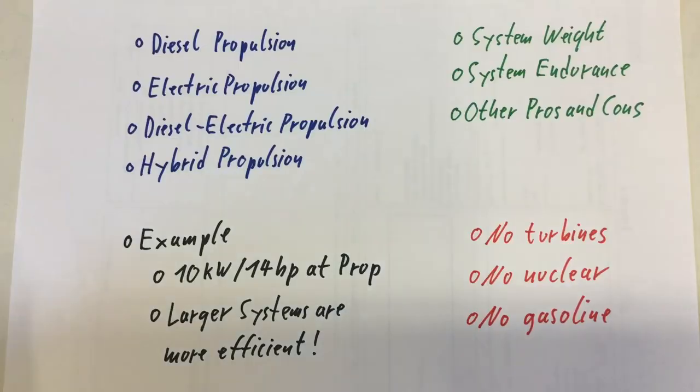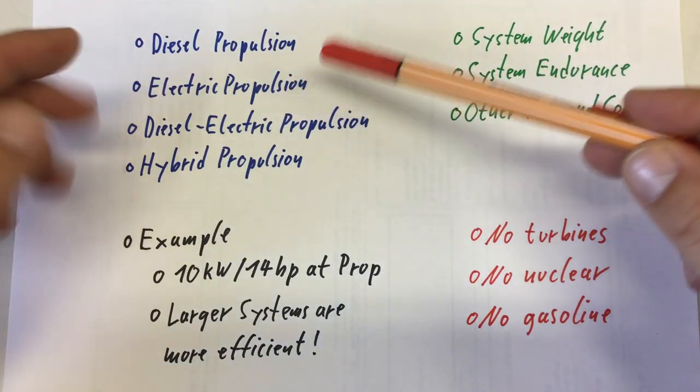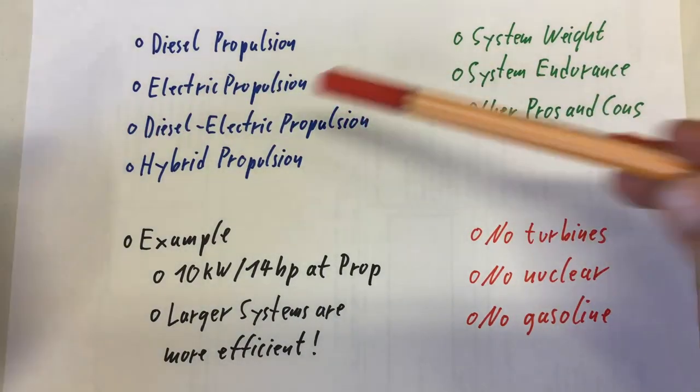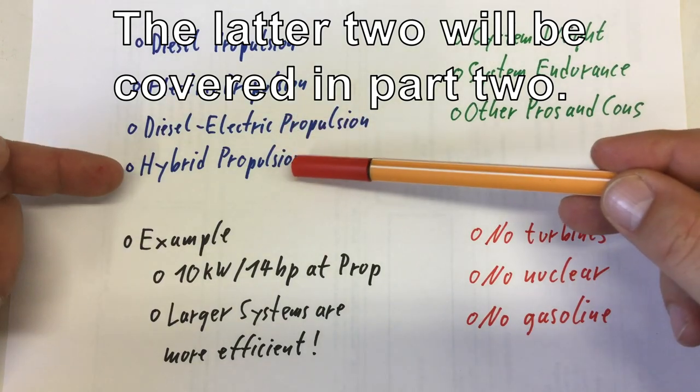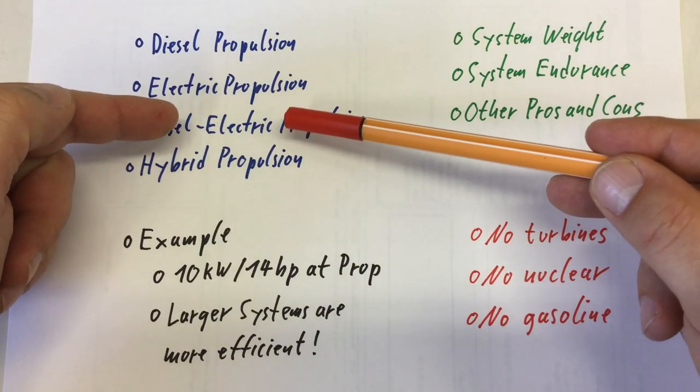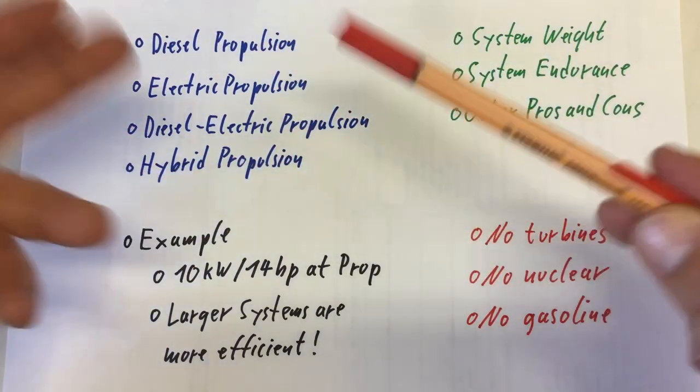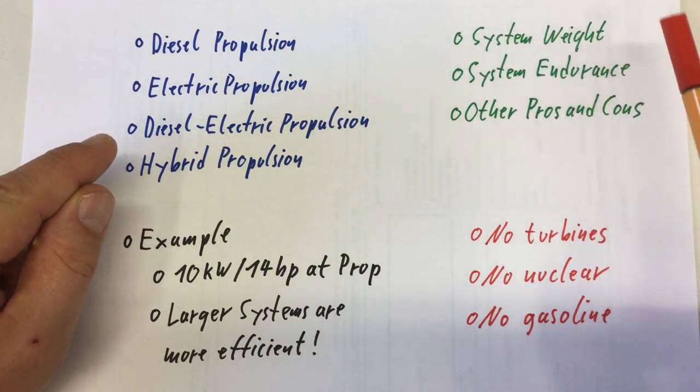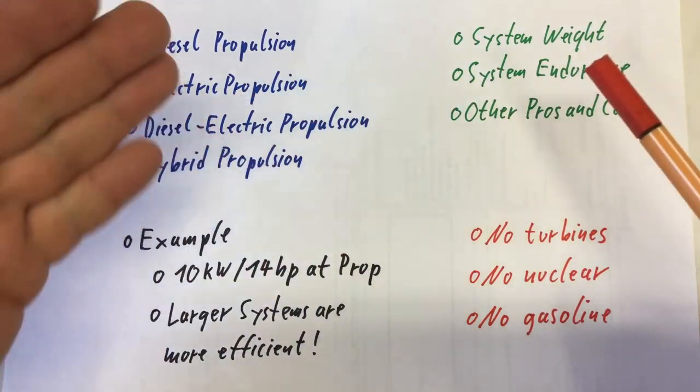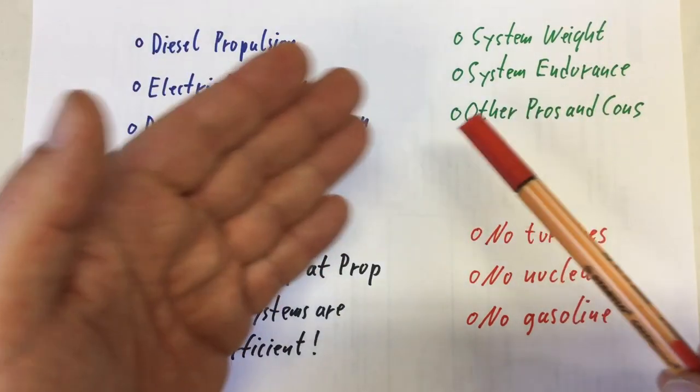I want to have a look at diesel propulsion, electric propulsion with lithium batteries, diesel electric propulsion, and hybrid propulsion. For these four kinds of marine propulsion systems, I want to look at the system weight, the system endurance in time, how long you can run the system under full power, and some other pros and cons.